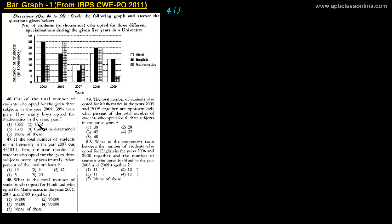We have to calculate how many boys opted for Mathematics in the same year. But looking at the sentence carefully — out of the total number of students — that means Hindi, English, and Mathematics combined. We know that in total, 62 percent are boys.